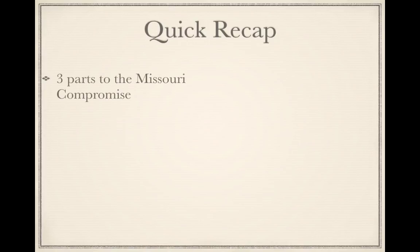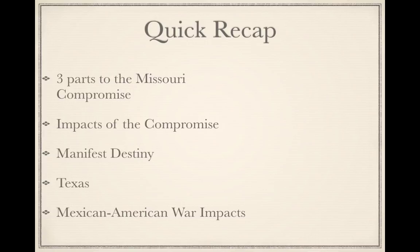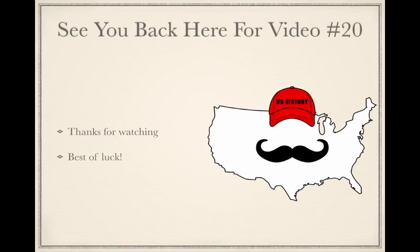Let's quickly recap what we need to know. The Missouri Compromise had three parts — be aware of those and the impacts of the compromise, understanding that Congress tried to prevent conflict by developing compromises for both sides. Manifest destiny is a key phrase covering land between the Atlantic and Pacific under U.S. control. Texas was annexed, the dispute over its borders led to the Mexican-American War, ultimately resulting in the Mexican Cession and the continual debate over whether new territory would be free or slave. Thanks for watching — look forward to video number 20 on more conflicts prior to the Civil War.